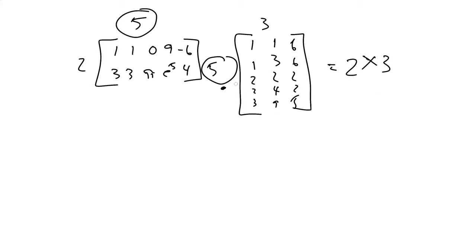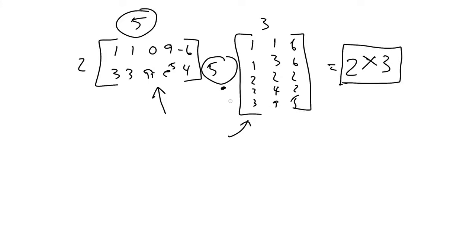Now, the reason that seems weird is that these are completely different sizes and shapes, so it's not at all obvious that I would be able to do this multiplication. Second of all, the answer you get bears no resemblance to either of your operands. I started with a 2 by 5, multiplied it by a 5 by 3, and I get a 2 by 3 — which is a relatively small result. It sort of doesn't seem to make sense, and yet that's the way it's defined.